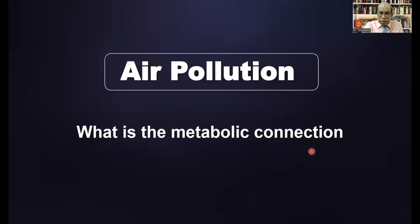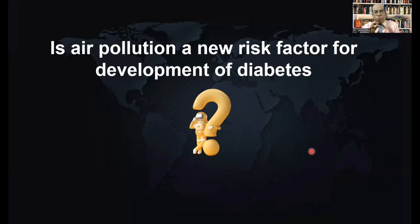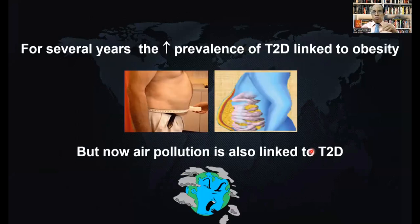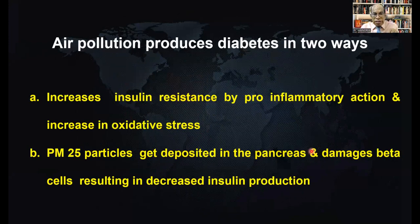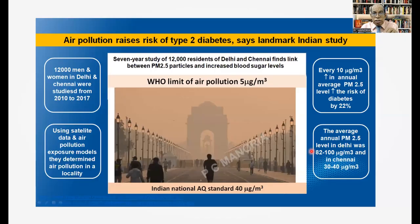Does air pollution have a metabolic connection? The answer is yes. Is air pollution a new risk factor for development of diabetes? Yes. For several years, the increased prevalence of type 2 diabetes was linked with obesity, but now we know air pollution is also an important factor for development of diabetes, and one of the reasons why diabetes is occurring in epidemic proportions in our country. Air pollution produces diabetes in two ways: it increases insulin resistance by pro-inflammatory action and increased oxidative stress, and PM2.5 particles deposited in the pancreas damage beta cells, resulting in decreased insulin production. A study of 12,000 patients in Delhi and Chennai found that every 10 micrograms per cubic meter increase in the annual average PM2.5 level increased the risk of diabetes by 22%.